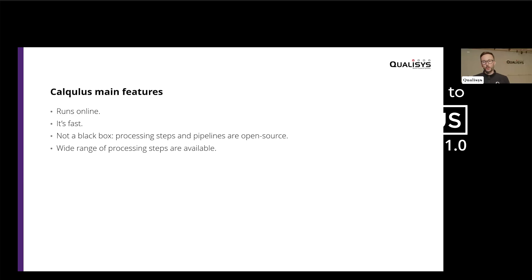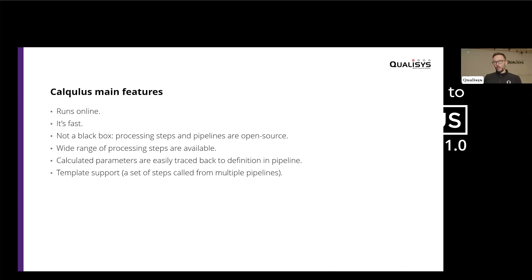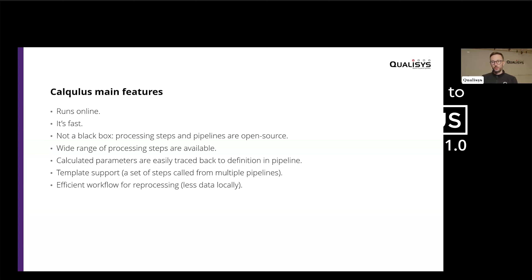You have a wide range of processing steps available. We also try to make parameters easily traceable — you can go back from a parameter to its definition in the pipeline. We have support for templates, which helps you avoid copy-pasting code across multiple pipelines — you create a set of steps that can be called from multiple pipelines. Since less data is stored locally, the workflow for reprocessing data is also very efficient. And we have support for EMG, force plates, and inverse dynamics.